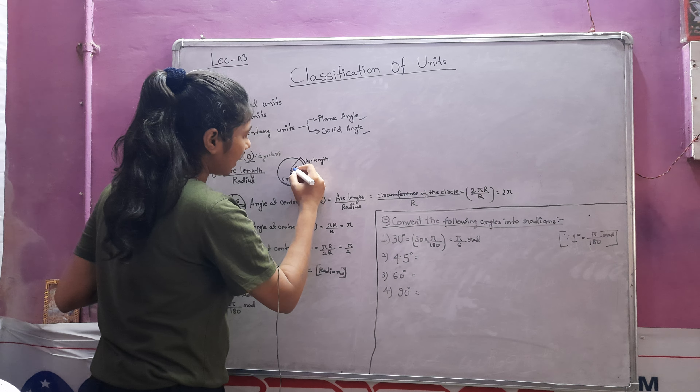Here are the key conversion values: a 360-degree angle equals 2π radians, a 180-degree angle equals π radians, and a 1-degree angle equals π/180 radians.